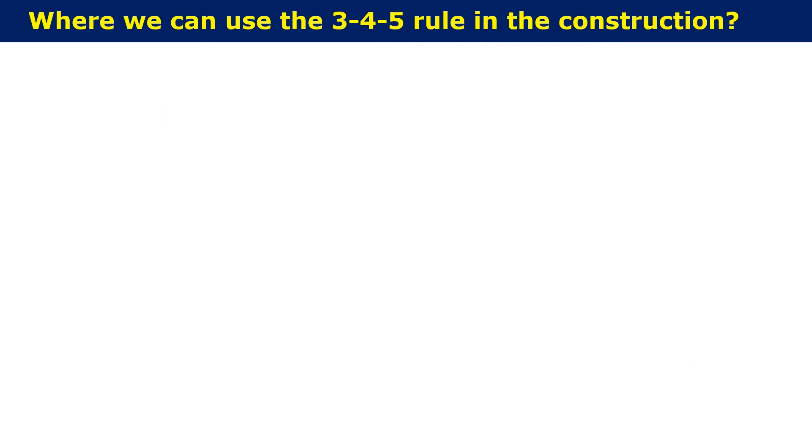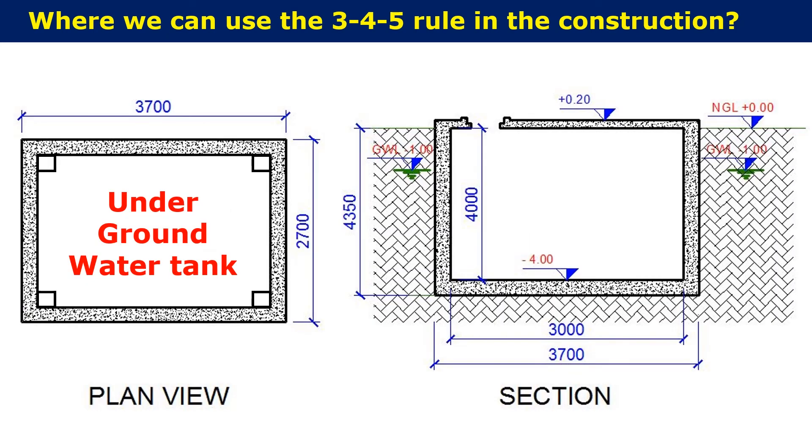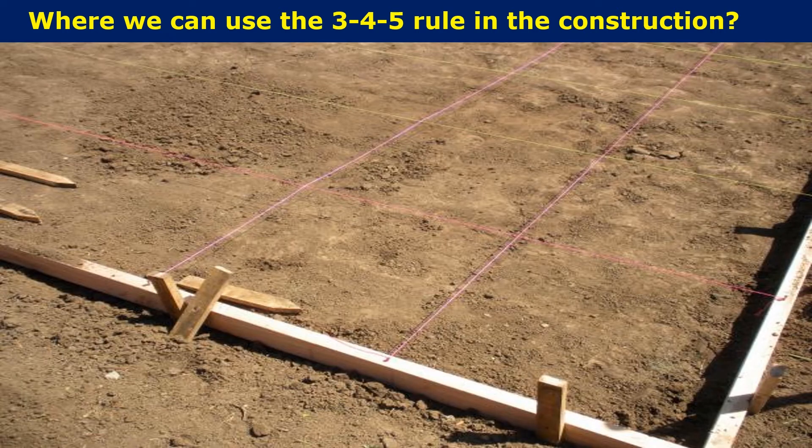Where can we use 3-4-5 rule in the construction work? This 3-4-5 rule can be applied to the layout of all types of structures like residential building, commercial building, underground tanks etc. If the corners of the site or plot is perpendicular to each other, you can use this method to complete the layout work. All you need is a measuring tape and a line out string.